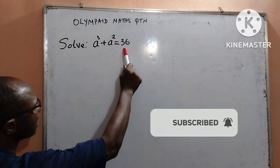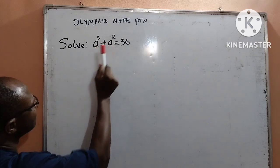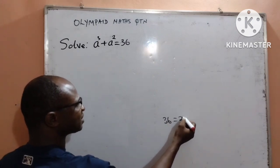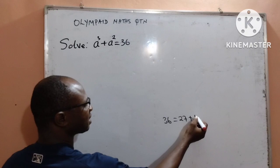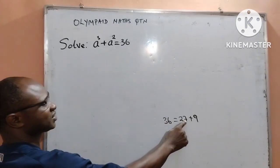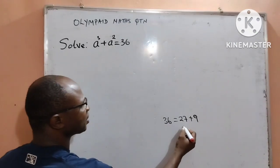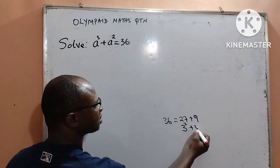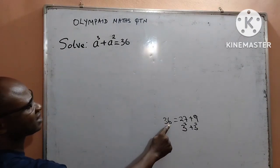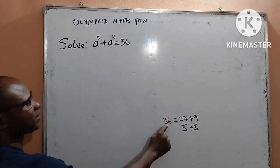Now, to start with, I will start from the right hand side. I want to express 36 to be in the same form as given to me from the left hand side. So, 36 is the same as 27 plus 9. I want to write 27 and 9 in index form and it is going to give me 3 to the power 3 plus 3 to the power of 2. Therefore, I can now write my 36 as 3 to the power of 3 plus 3 to the power of 2.